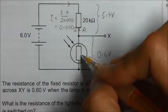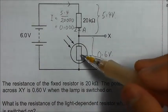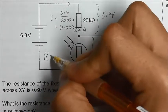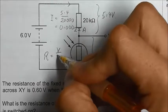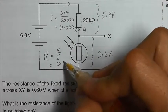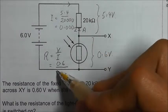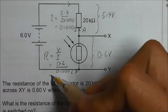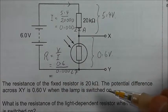Now we want to find out what is the resistance of the light-dependent resistor. We can use the formula resistance equals voltage divided by current. So the voltage here is 0.6 and the current is 0.00027.